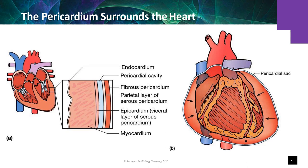Atrial walls are typically thin as the atria are not designed to generate high pressure. The left ventricle, with thick muscle walls, generates high pressures routinely up to 120 millimeters of mercury to drive blood into the systemic circulation. The thinner, less muscular right ventricle generates much lower pressure, routinely up to 25 millimeters of mercury, to drive blood flow in the lower-resistance pulmonary circulation.